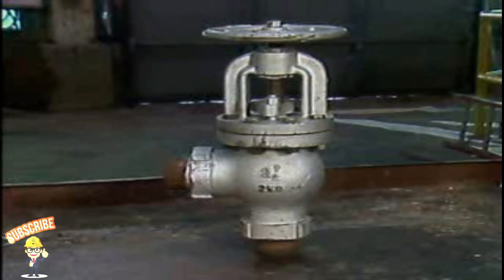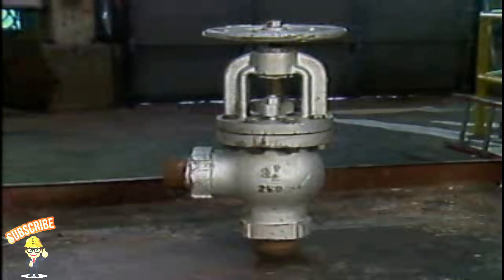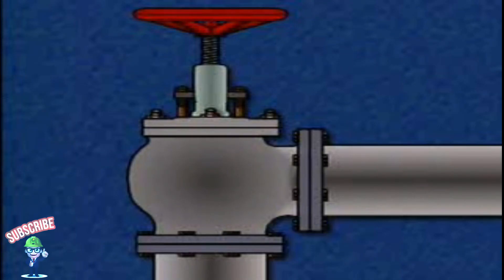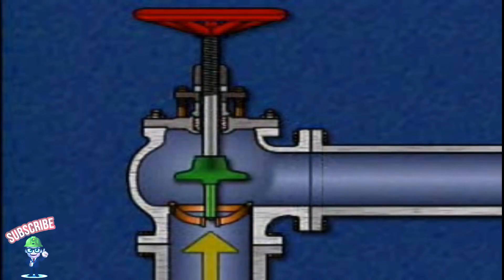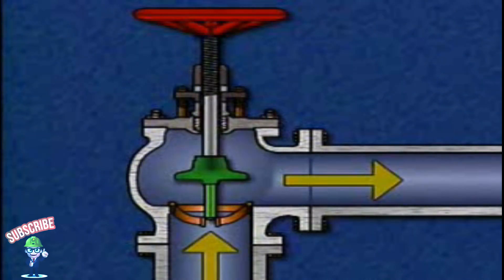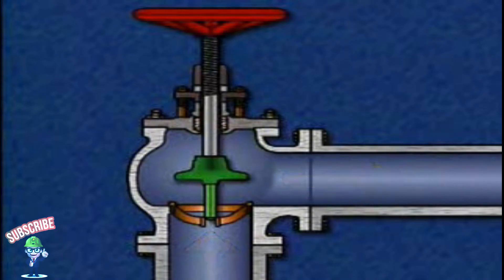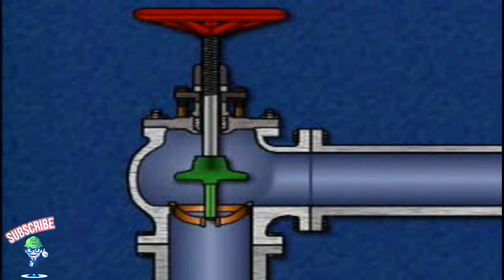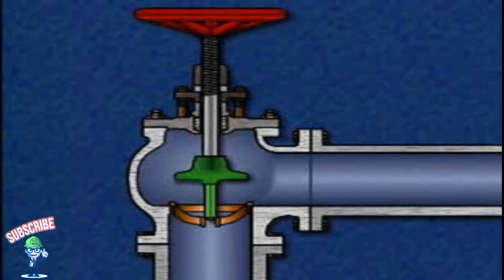The seating surface, body type, and disc arrangement of a globe valve vary according to the design and function of the valve. For example, an angled globe valve, or angle valve, has a globe-shaped body with an inlet and an outlet at right angles. This design enables the valve to change the direction of fluid flow. Using an angle valve eliminates the need for the additional piping that's normally required to change the direction of flow when other types of valves are used.